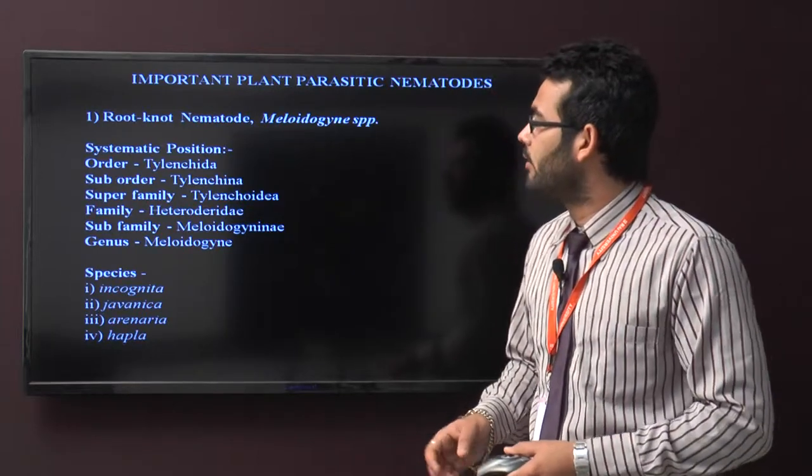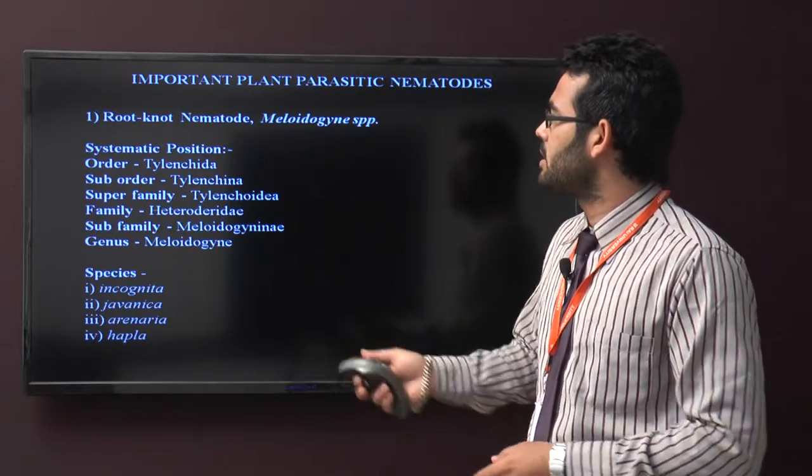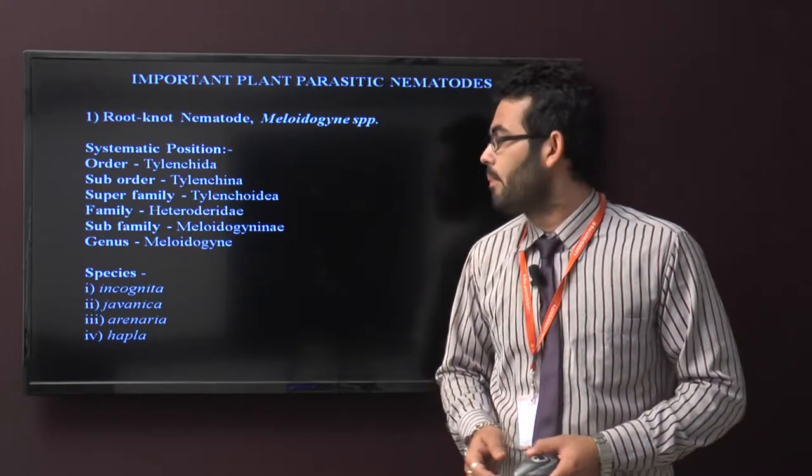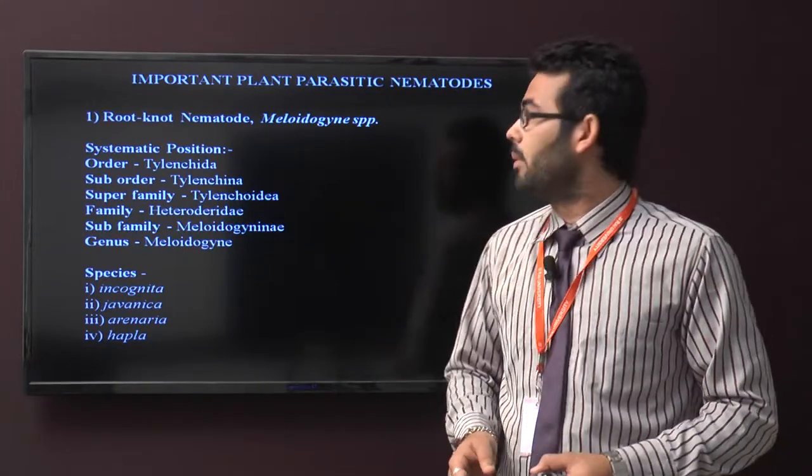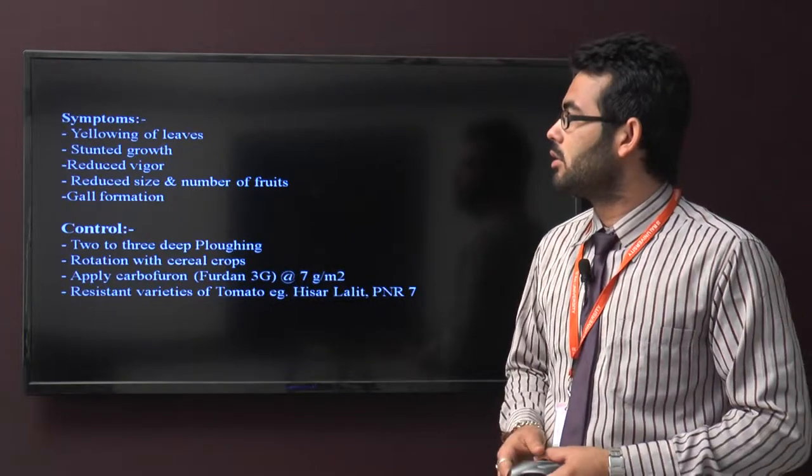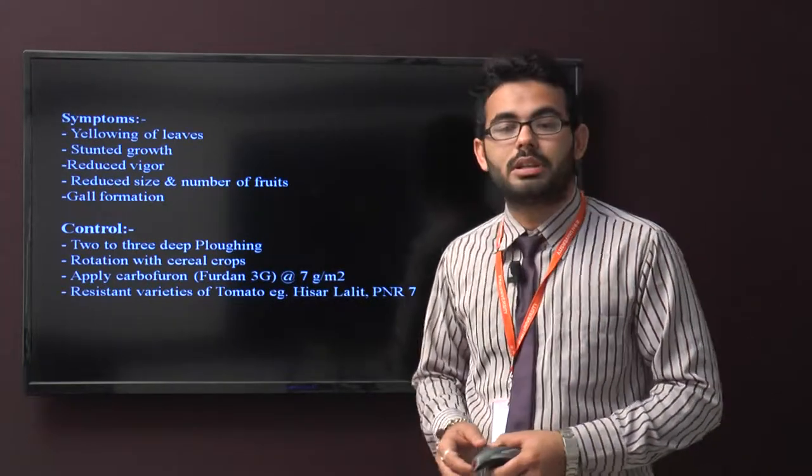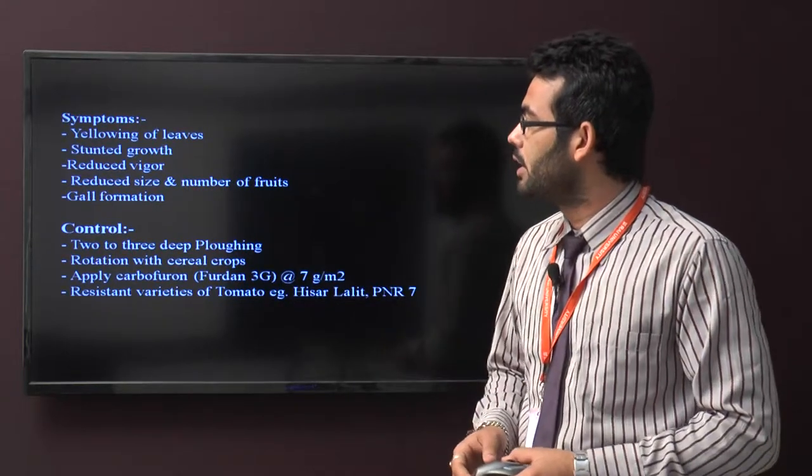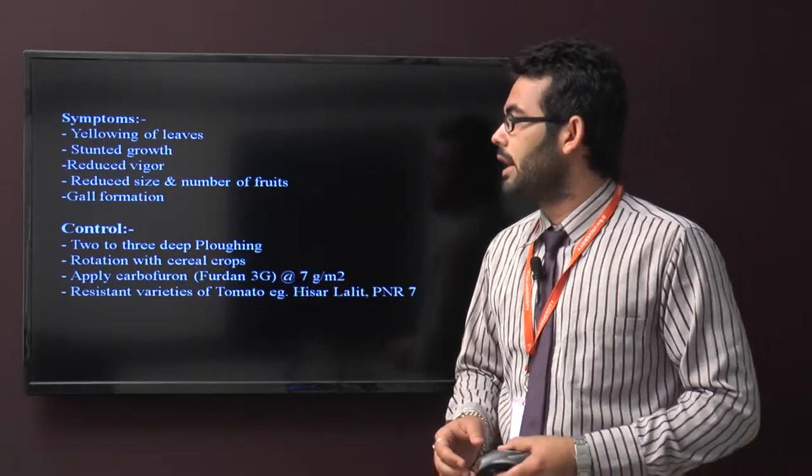It's in superfamily Tylenchoidea and family Heteroderidae. Species of Meloidogyne include incognita, javanica, arenaria, and hapla. Root knot nematodes cause yellowing of leaves, stunted growth, reduced vigor, reduced size and number of fruits, and gall formation.